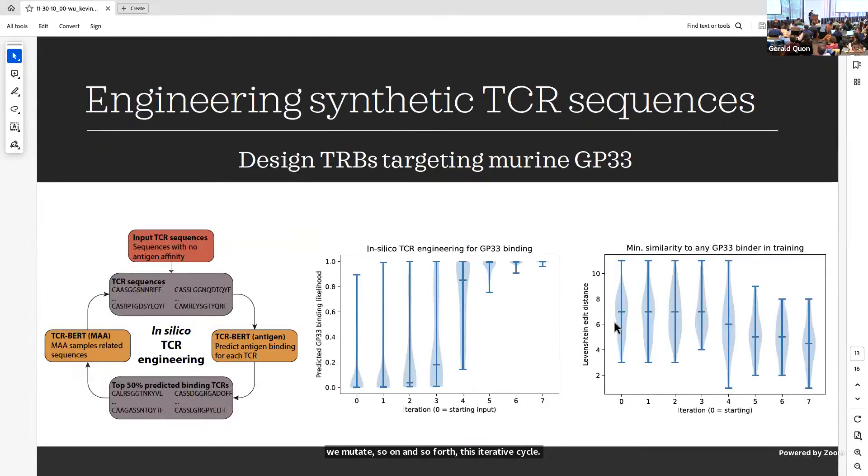If we run this cycle over iterations, we see that on the x-axis, as you run these iterations, on the y-axis for the center plot, these predicted binding for our target of interest rises up over time. In the very beginning, for the zeroth iteration, we have basically not much binding. But after just five or six, seven iterations, we converge upon a set that's predicted to have very good binding.